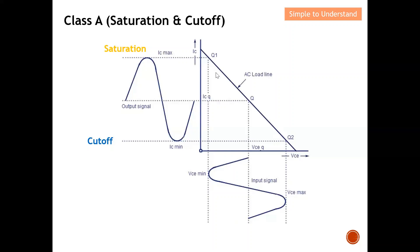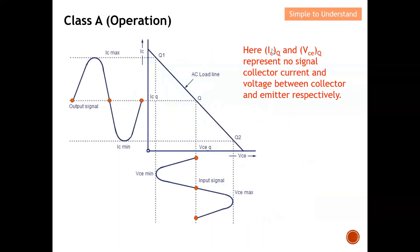Let's take a closer look at this diagram. ICQ and VCEQ represent the no-signal collector current condition. At the Q point you can see that the collector current is equal to zero. Also, the voltage between the collector and emitter, VCE, is also at zero. If you trace it here, at this Q point the voltage between collector and emitter is zero.